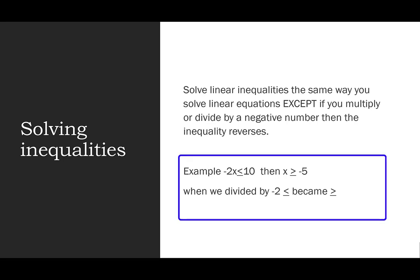For example, if I had negative 2x is less than or equal to 10, then when I divide by negative 2, the less than sign is going to flip over and become greater than. So now I would have x is greater than or equal to negative 5.